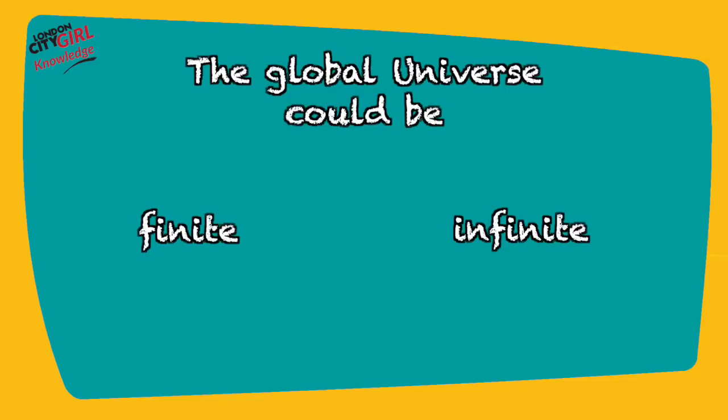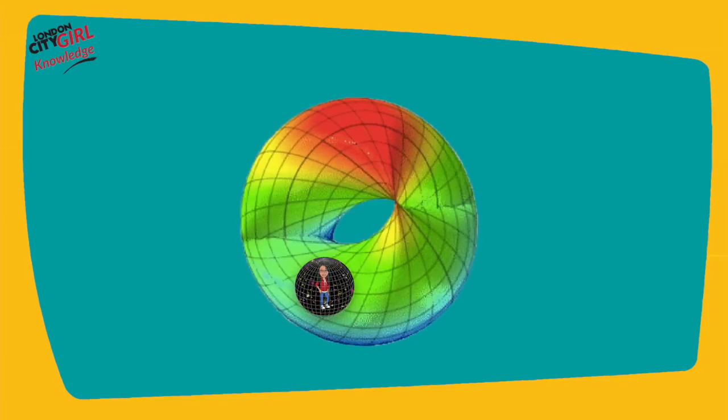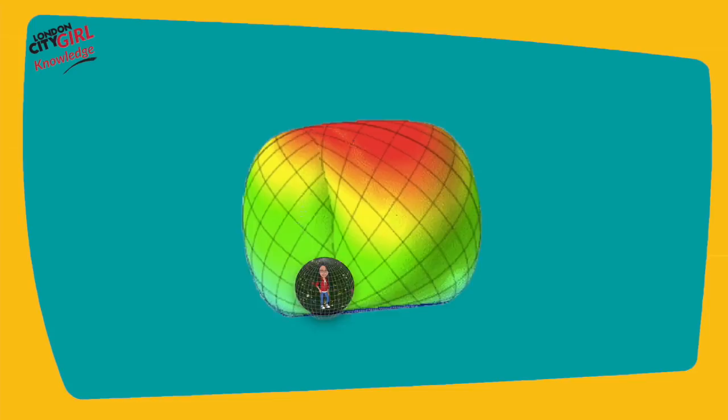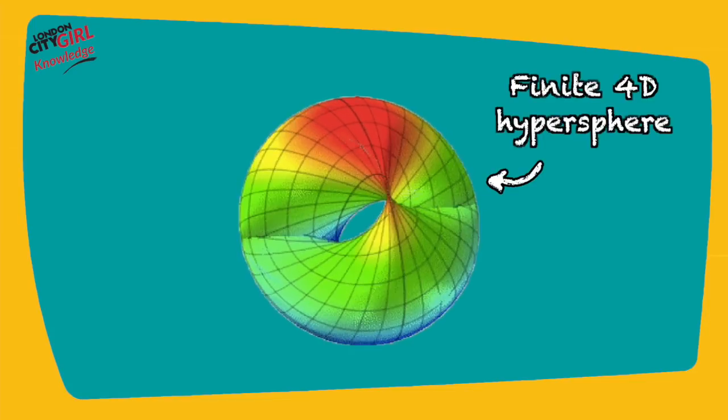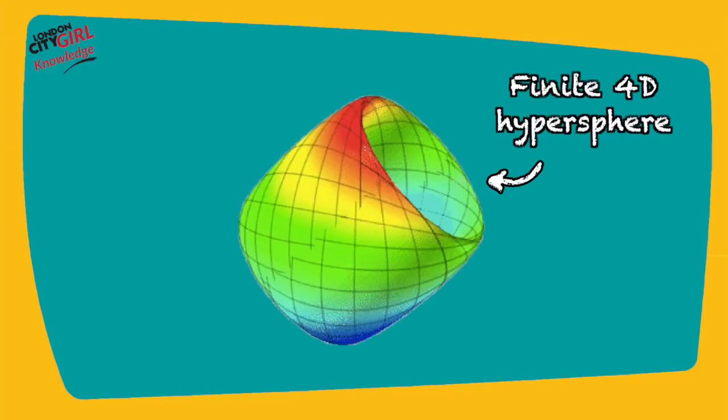Say the global universe is finite. We could be beings living on a 3D surface of a finite 4D hypersphere which we can't detect. To use an analogy to make that clearer, let's take an ant sitting on the surface of a large inflating balloon.